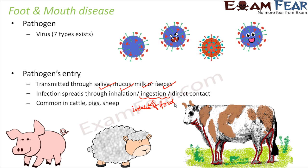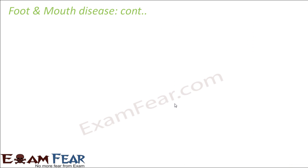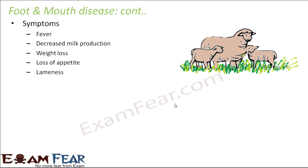Foot and mouth disease is very common not only in cattle but also in pigs and sheep. Symptoms include fever, decreased milk production, weight loss, loss of appetite, and lameness. Loss of appetite means the animal doesn't feel like eating, which leads to weight loss, making the animal weaker, and consequently there is decreased milk production — all these symptoms are related to each other.